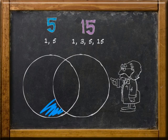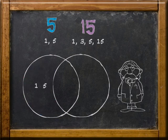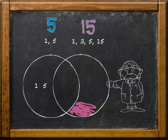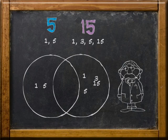Remember that the factors of one number go in the left circle. In this case, 1 and 5 go into the left circle. And the factors of the other number go into the right circle. In this case, 1, 3, 5, and 15.